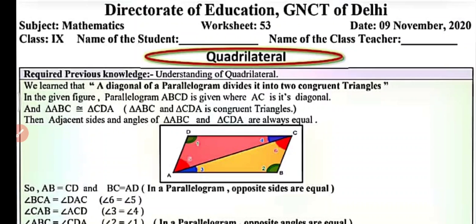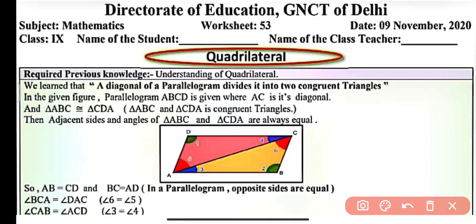We must have understanding about these quadrilaterals. In the previous video we have already learned that a diagonal of a parallelogram divides it into two congruent triangles. So here in the figure we have a parallelogram ABCD where AC is its diagonal, and triangle ABC is congruent to triangle CDA.